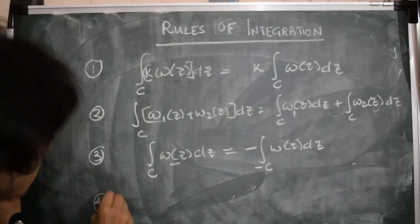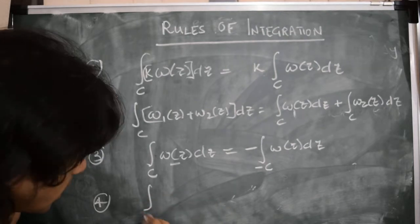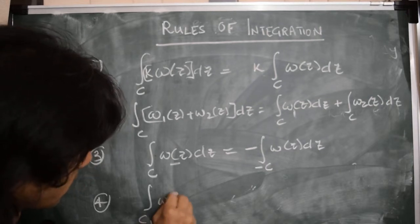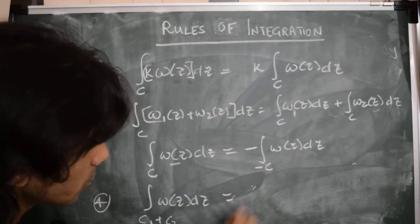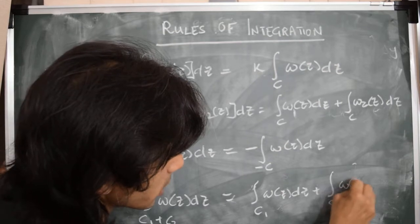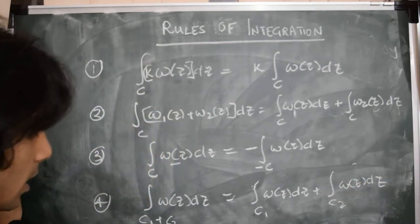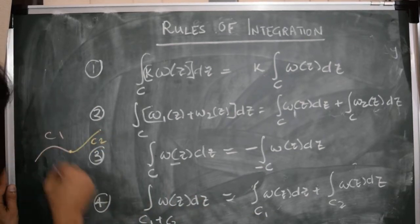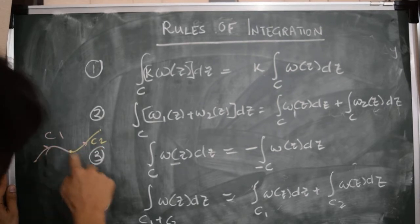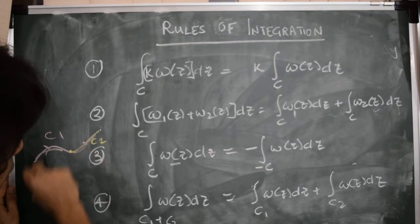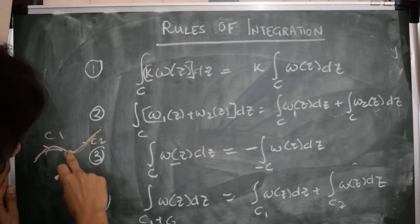A fourth rule is that if you are integrating along two contours which are joined together, let's call them c1 plus c2, then the integral of w(z) dz over c1 plus c2 is equal to the integral over c1 of w(z) dz plus the integral over c2 of w(z) dz. So if we have a contour c1 followed by another contour c2 and we integrate the function along the entire path, the overall integral can be broken down into the sum of integrals across both paths separately.